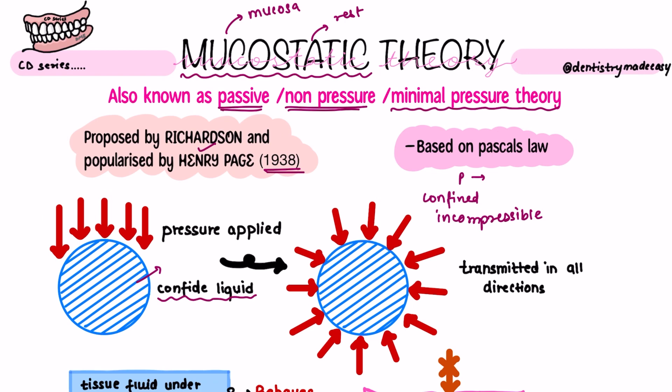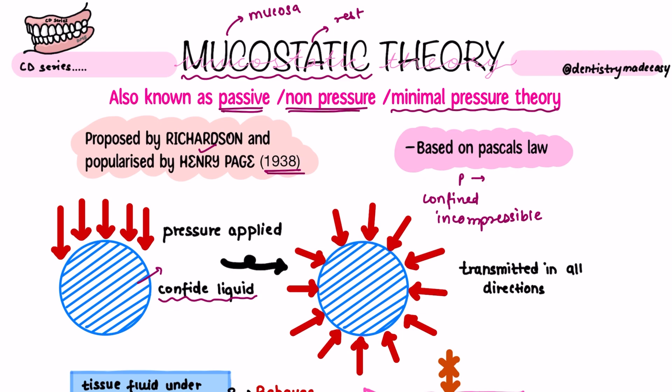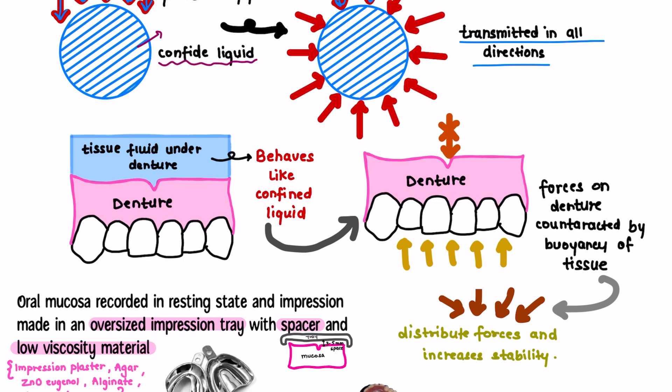Confined basically means restricted, limited to a particular area, or enclosed. Incompressible, as the name says, means it cannot be compressed. So when you apply pressure at any point on such a confined liquid — for example, in an upward direction on this liquid — according to Pascal's law, that pressure will be transmitted in all directions. That is Pascal's law.